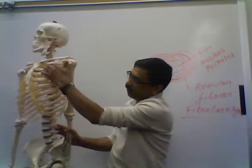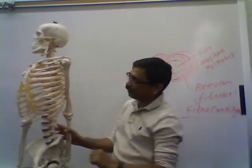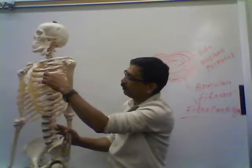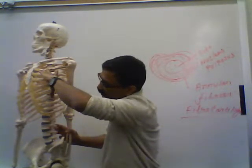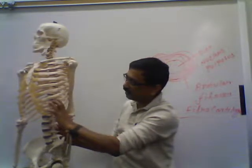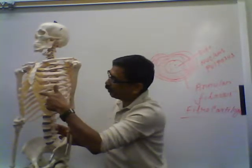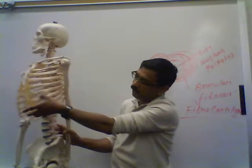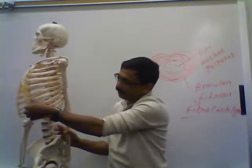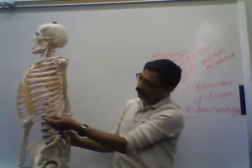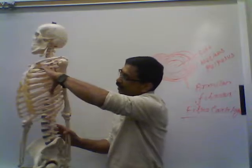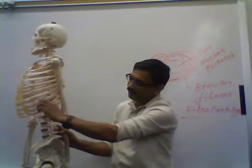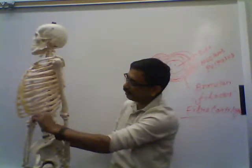The 12 ribs are divided into true and false ribs. The upper seven are true ribs, each with its own individual costal cartilage. The lower five are false ribs. Among the false ribs, the upper three share one costal cartilage, and the lower two are floating ribs with no costal cartilage attachment.